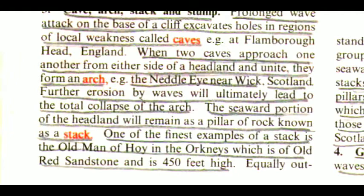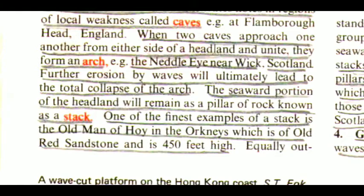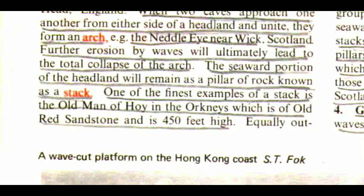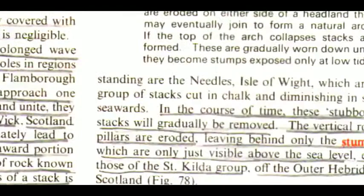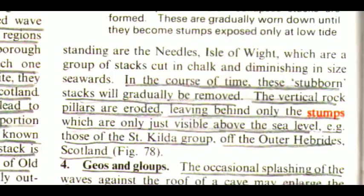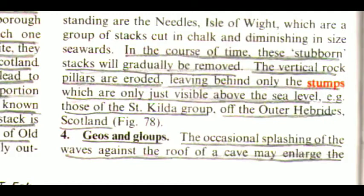The seaward portion of the headland will remain as a pillar of rock known as a stack. One of the finest examples of a stack is the Old Man of Hoy in the Orkneys, which is of old red sandstone and is 450 feet high. Also outstanding are the Needles — isolated pillars of white chalk — which are a group of stacks cut in chalk and diminishing in size seawards. In the course of time, these stacks will gradually be removed. The vertical rock pillars are eroded, leaving behind only the stumps, which are only just visible above sea level — example, those of the St. Kilda group of the Outer Hebrides, Scotland.